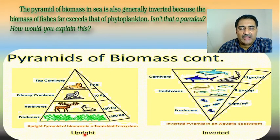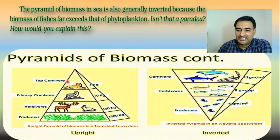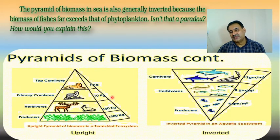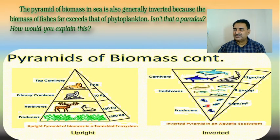If you go to a terrestrial ecosystem for biomass, then: producer = 1000 kg, herbivores = 100 kg, primary carnivores = 10 kg, top consumer = 1 kg — so in a terrestrial ecosystem, the biomass pyramid is upright. This paradox occurs because the ocean floor is large — phytoplankton exist in large numbers overall, but per meter square, phytoplankton biomass is less than the fish feeding on them.